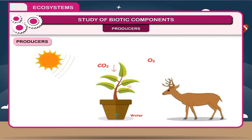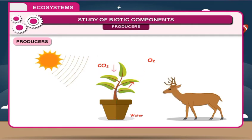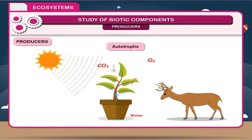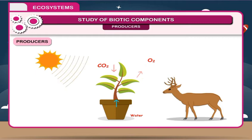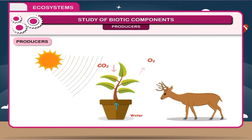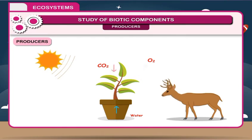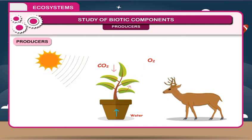Producers: Plants are the only producers in the ecosystem. They are also called autotrophs. All living organisms that manufacture their own food in the presence of sunlight are autotrophs, and only plants can do so. They make their food by the process of photosynthesis, using the sun as an energy source.